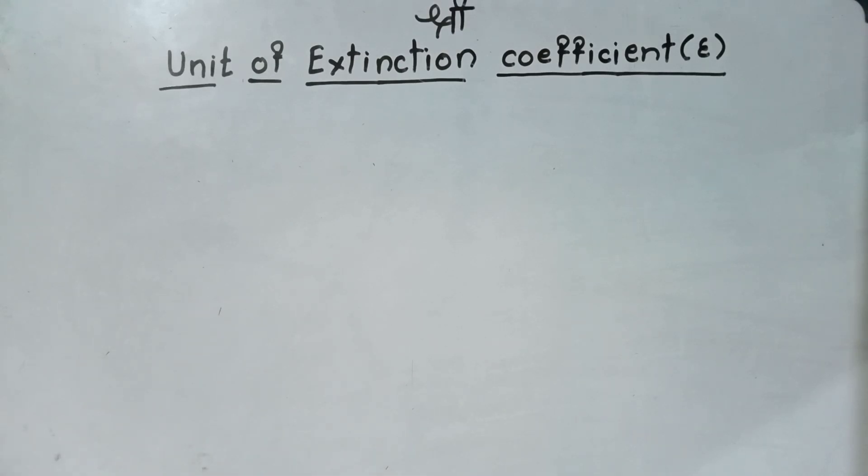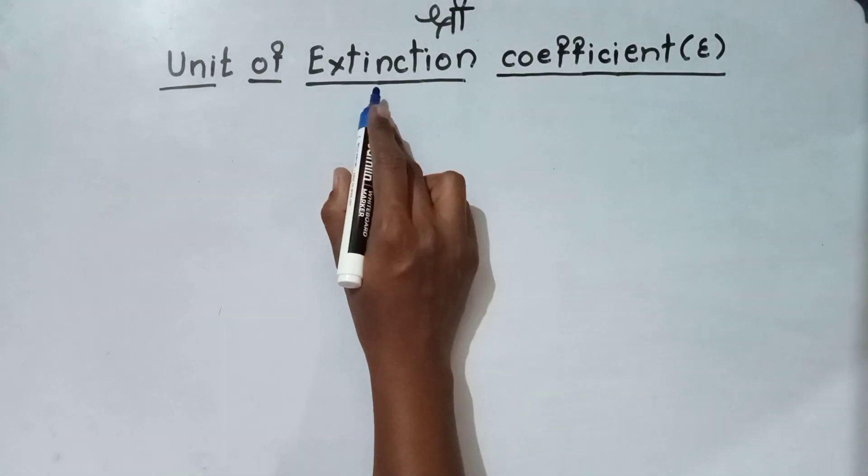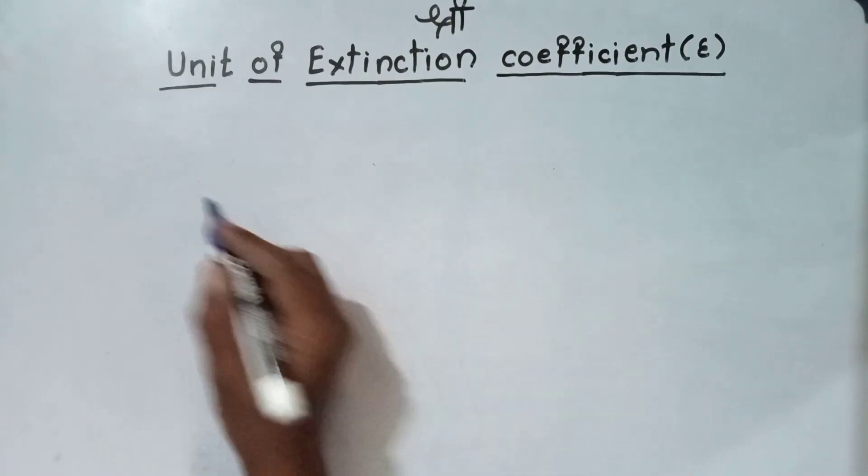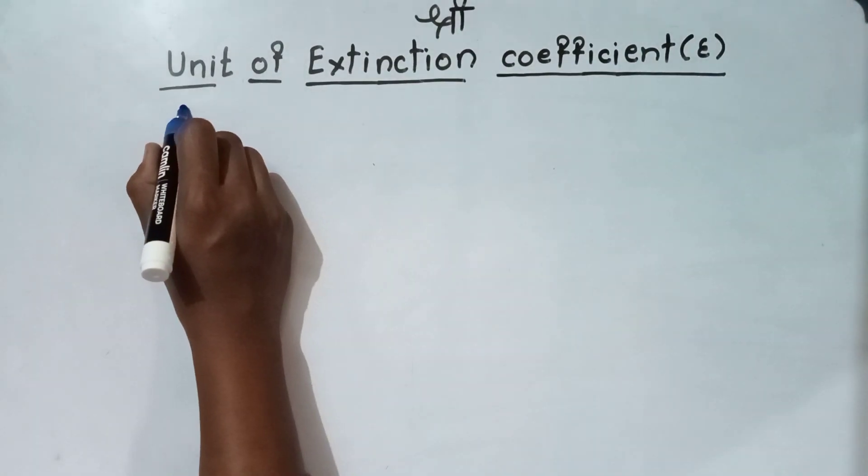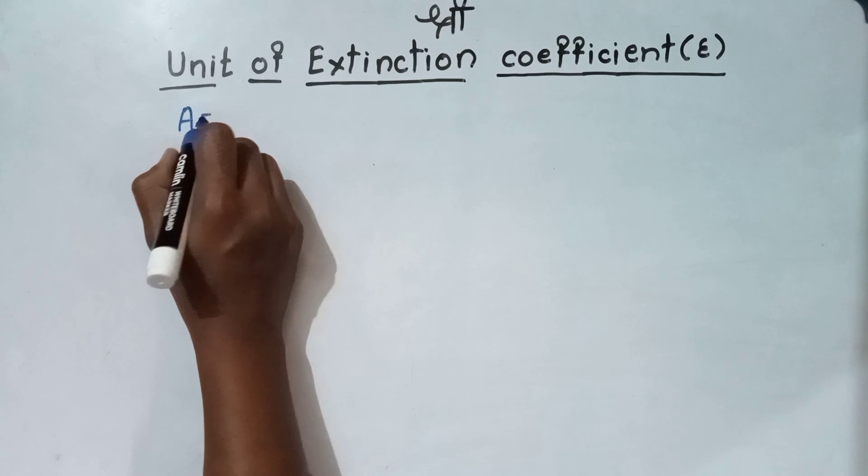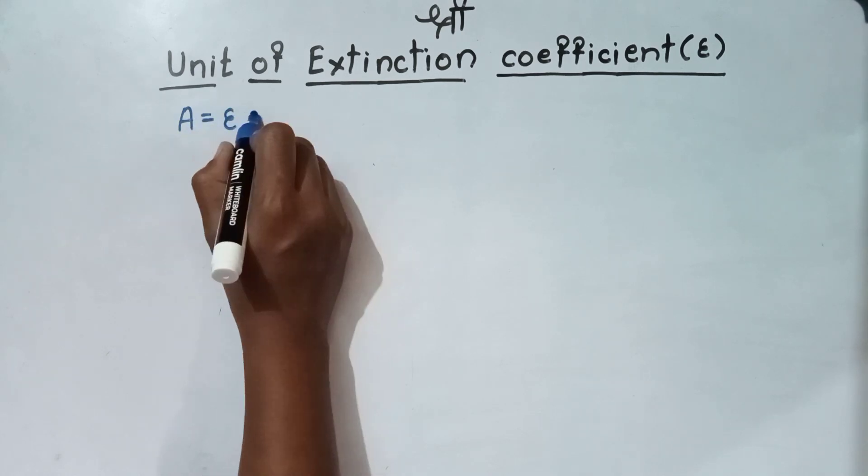Hello students, in this video we will see unit of the extinction coefficient epsilon. According to Beer-Lambert's law, we know that absorbance is equal to epsilon Cl.